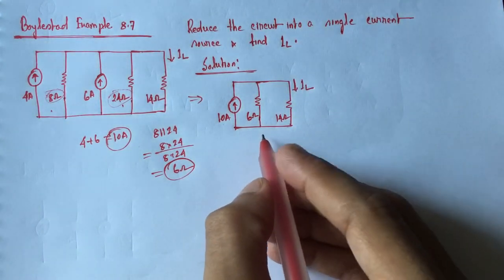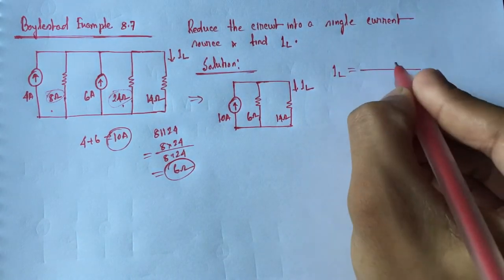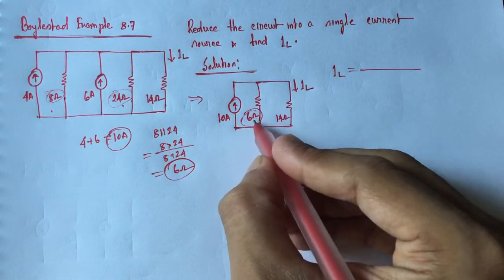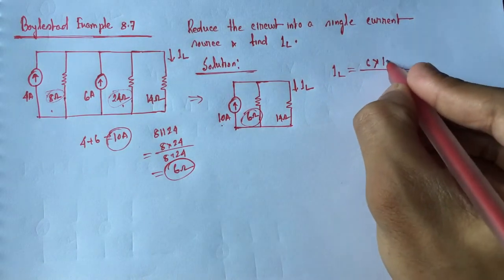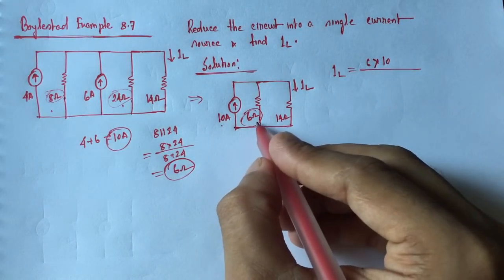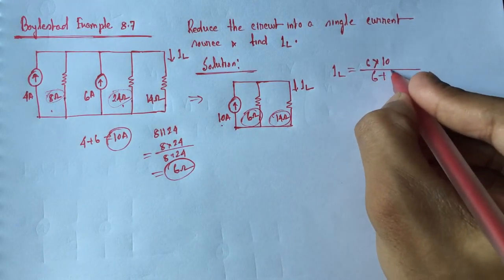Now, we can find out IL by using current divider rule. IL is equal to resistance of other end, that is 6 ohm, multiplied by the current 10 ampere, divided by the combination of resistance, that is 6 plus 14.